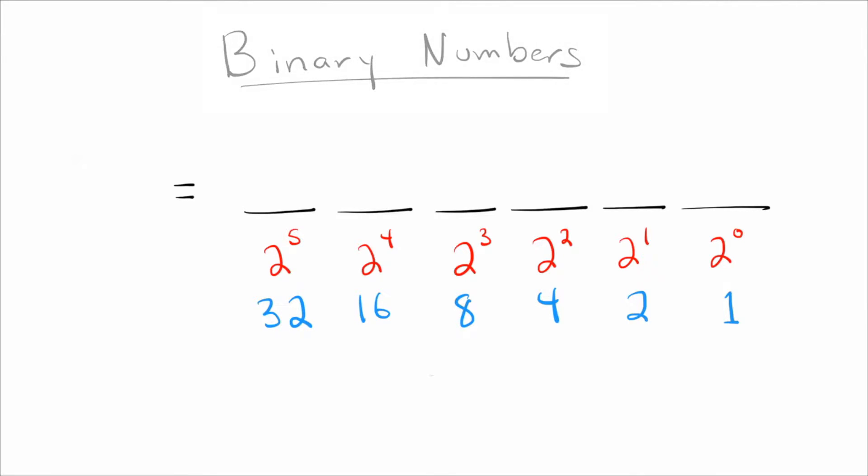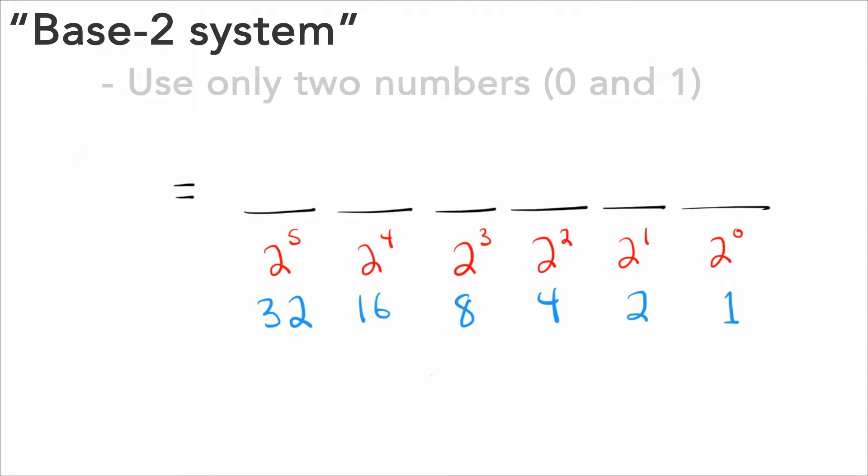Okay, so binary is what we call a base-2 system. And all the base-2 means, it means two things. One is that you have two choices for everything. Everything is a zero or a one. Second is that each of the places is a power of two.